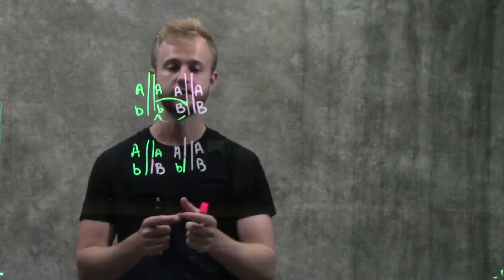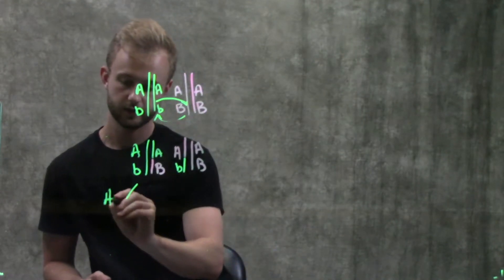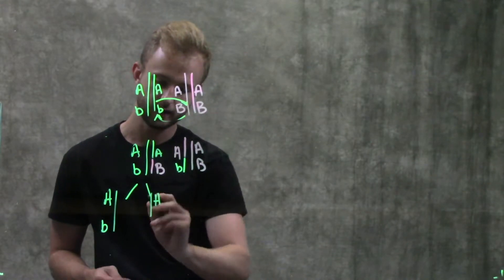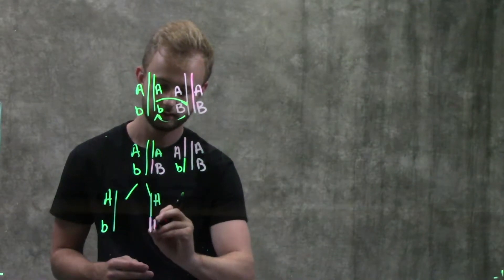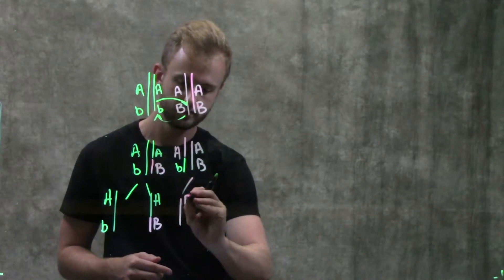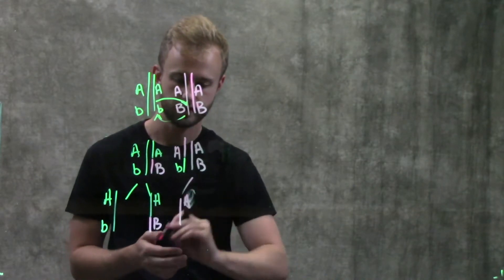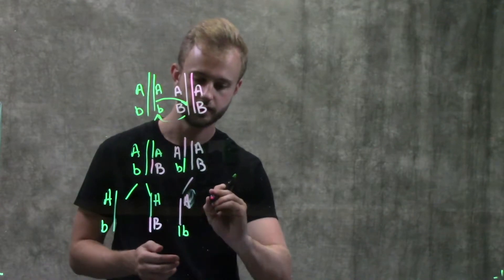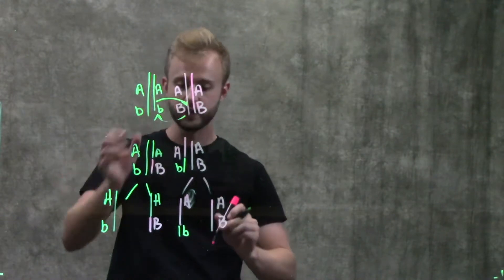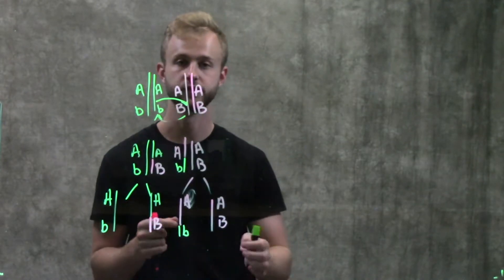And so now when these get separated into gametes, we're going to have some cells that get a B chromosome. We're going to have some cells that get A and then B. And we'll have some cells that get A and then B. So we have these four different potential genotypes that these individuals could have.